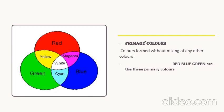Colors that cannot be formed by any other color are called primary colors. Without mixing, there are certain colors which exist in nature by themselves — those colors are called primary colors. I have given three different circles here. What is the major color in each of these three circles? One is red, another one is green, and another one is blue. So these three colors are called your primary colors.